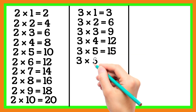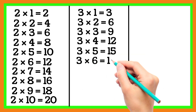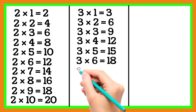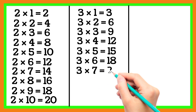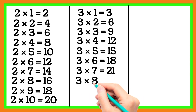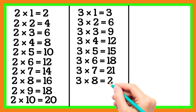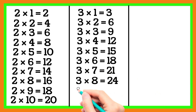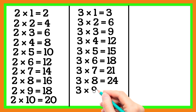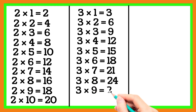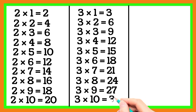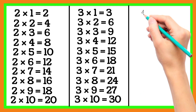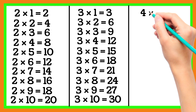3 6 is 18, 3 7 is 21, 3 8 is 24, 3 9 is 27, 3 10 is 30.